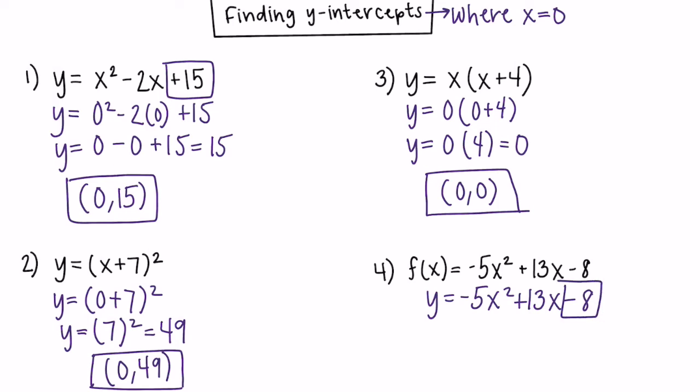So our ordered pair for this one, again, x is only 0 in a y-intercept. And when we plugged in 0, if you did it that way, or if you just looked at the constant, we found that our y-intercept is going to be at negative 8. Always pay attention to the sign in front of that constant.